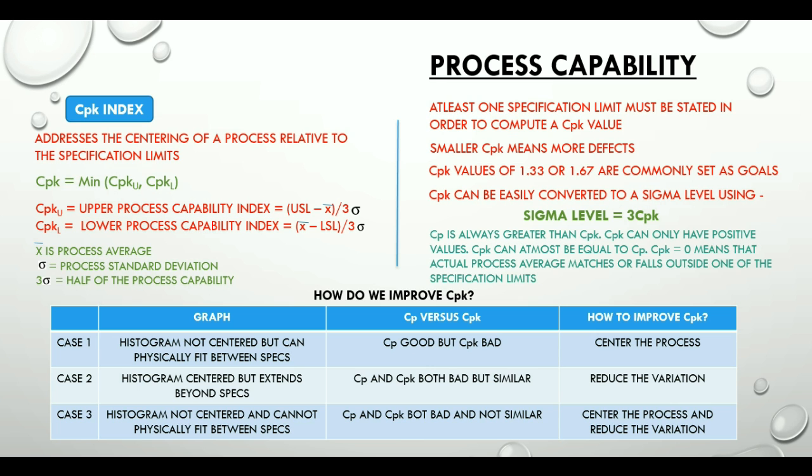Case 2, try to visualize what we are talking about these 3 cases. Case 2 is histogram centered but extends beyond specs. The histogram is centered but it extends beyond the specification limit, which means that CP and CPK both are bad and yet similar. So in this case we need to reduce the variation.